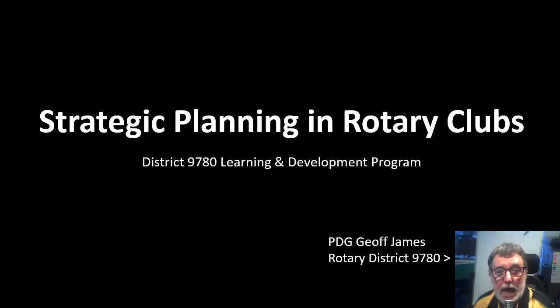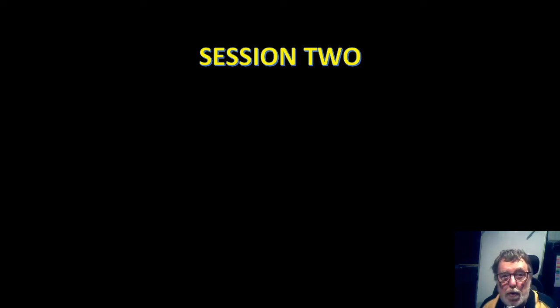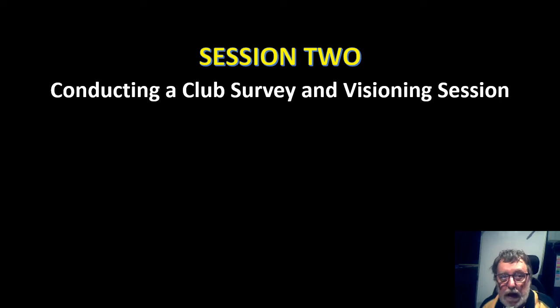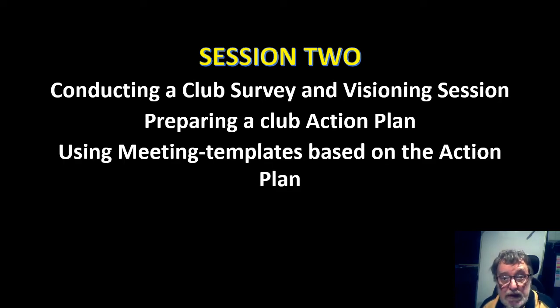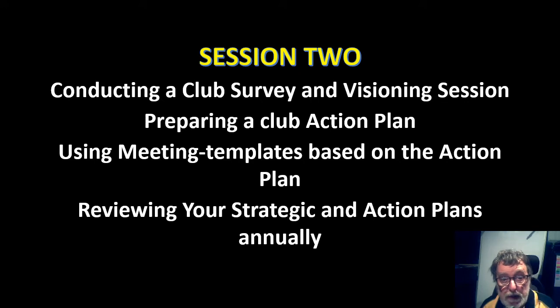Hi Rotarians, thank you once again for joining me for this second session in the series on strategic planning for Rotary Clubs, as part of the 2020 District 9780 online assembly. This session takes you through the process of conducting a club survey and using that survey and your strategic plan to inspire a visioning session, where you develop lists of specific action-based objectives for your club. You can then turn that list into an annual action plan and committee meeting templates that drive all programs in your club, and finally it covers reviewing your strategic and action plans on an annual basis.